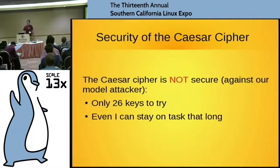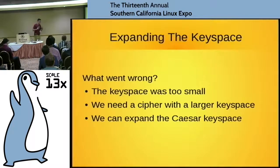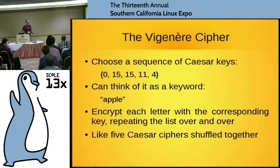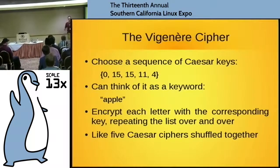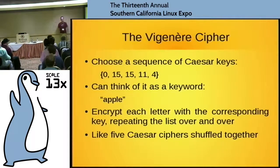So let's talk about what went wrong. What went wrong is pretty simple: the key space was too small. It doesn't matter what the algorithm was — we need a cipher with a larger key space. We can actually expand this key space on the Caesar cipher. What I can do is realize I don't have to encrypt every letter with the same key. I could pick a sequence of keys like 0, 15, 15, 11, 4 — which in our encoding is just the keyword 'apple.' I encrypt the first letter with the first key, the second letter with the second key, until I run out of keys, and then I just repeat it. It's like five Caesar ciphers shuffled together like a deck of cards. This is called the Vigenère Cipher.